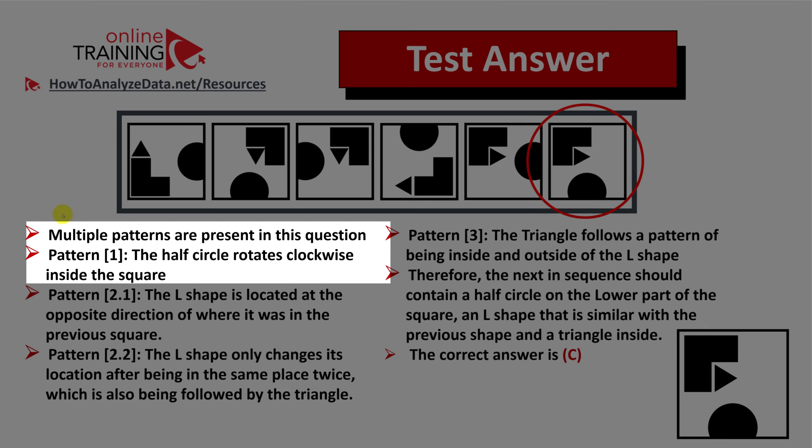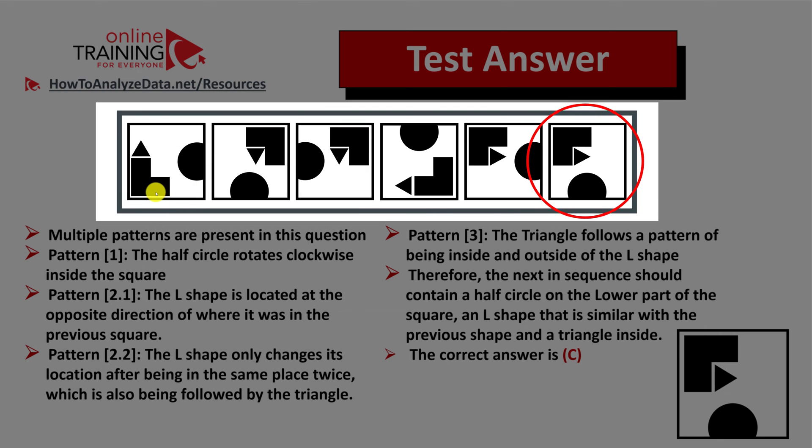The first pattern is where half circles rotate clockwise inside the square. So the first position is on the right, next position is at the bottom, then left, top, and then you see the cycle repeating.